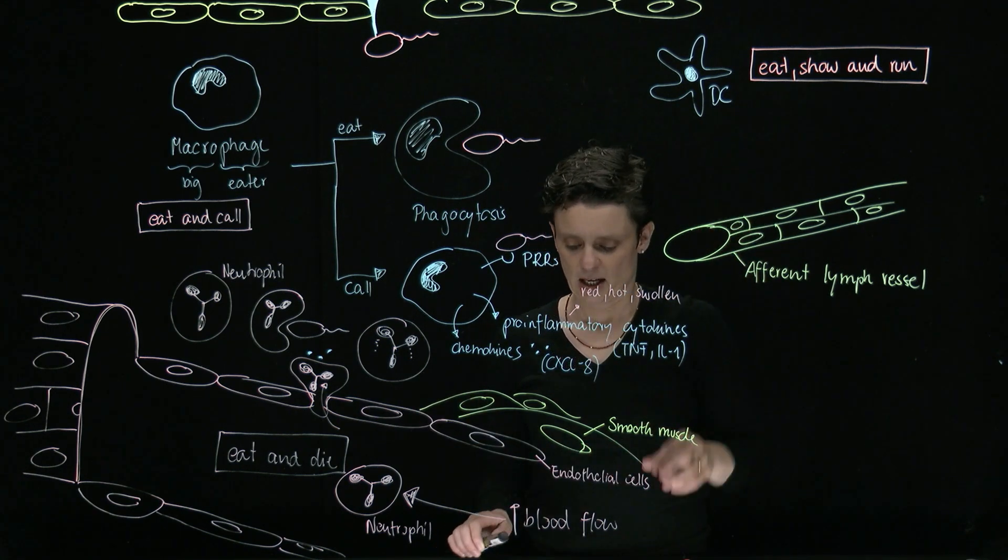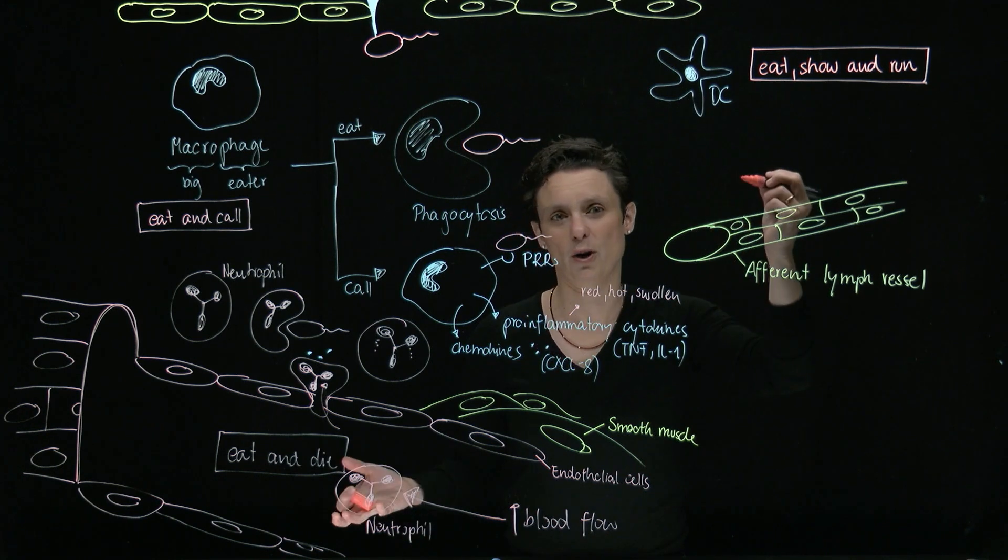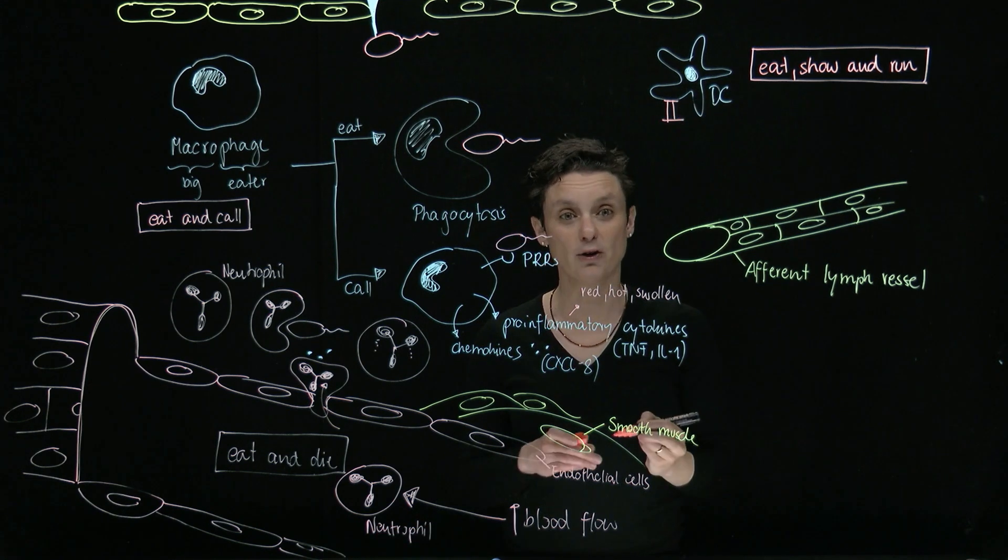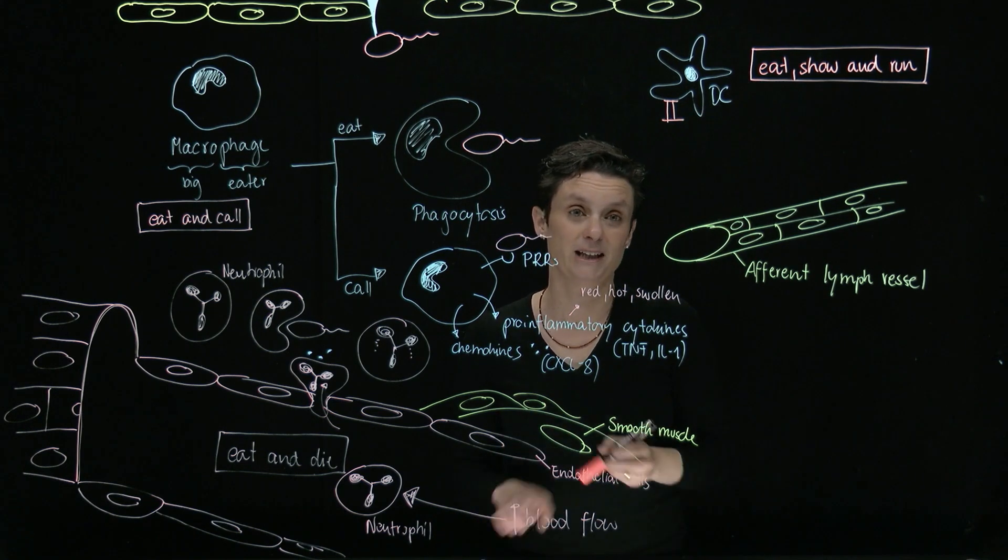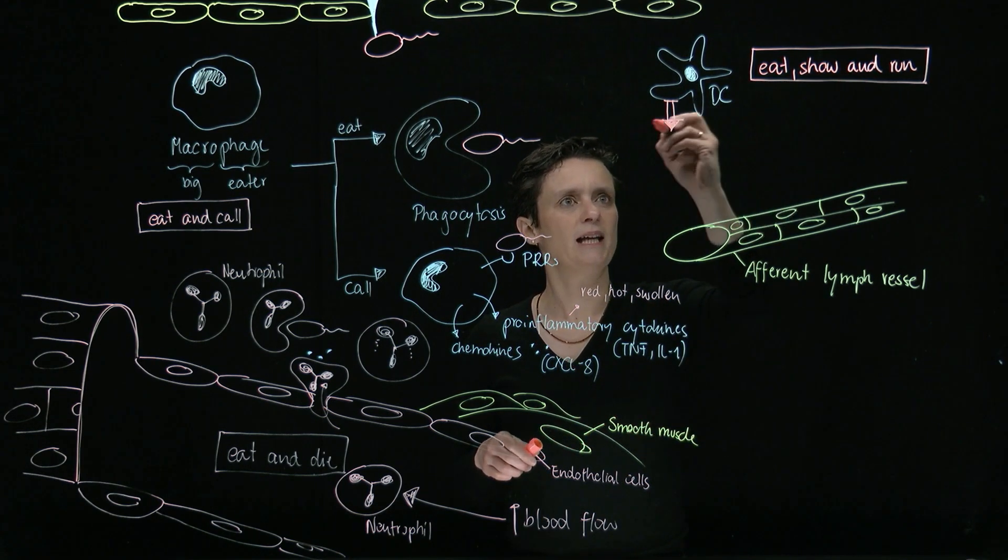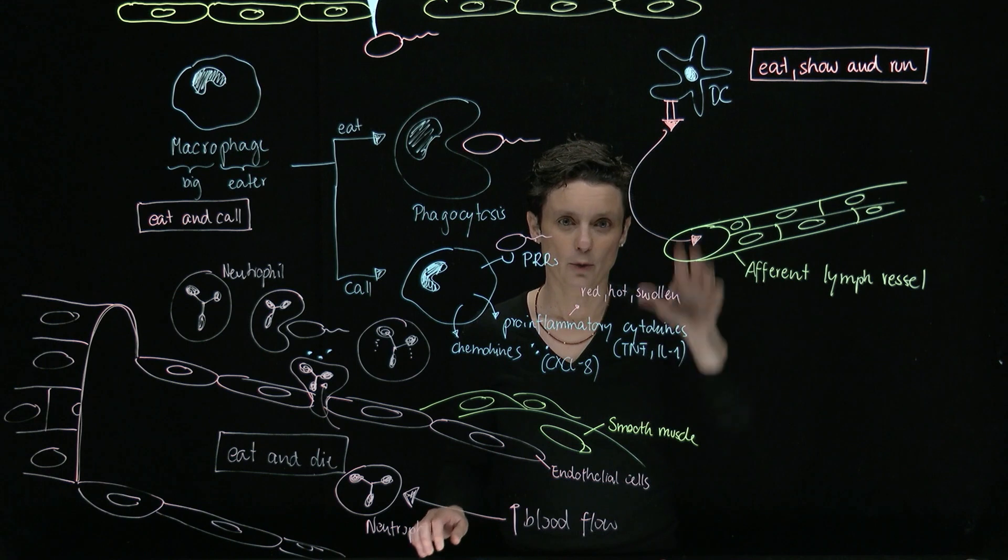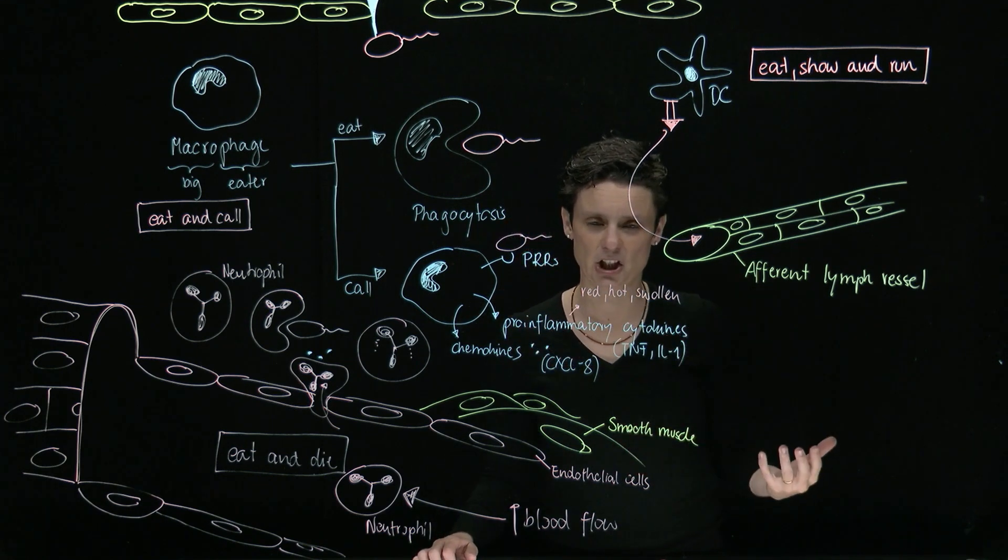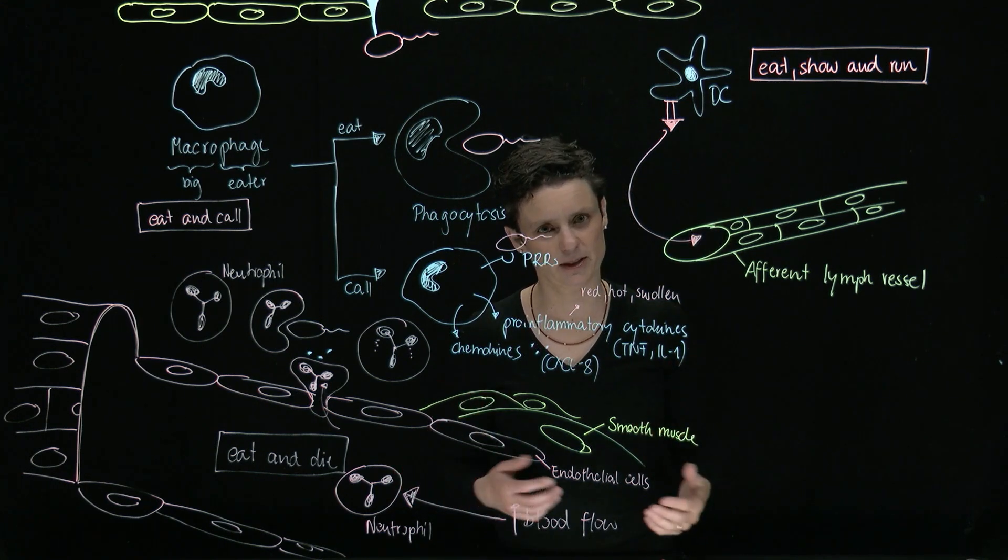Although it can also eat up stuff, what it really is good at is showing stuff that it has eaten. So it's proudly presenting and then running off to get some extra help. So it eats up stuff like the macrophage. But in contrast, it's very good in showing what it has eaten. And remember cells don't have hands to show stuff. So how do they show stuff? They show it via MHC molecules. It's going to show a part of what it has eaten, some sort of a peptide. And then it's showing it and running off. It is running off through this afferent lymph vessel, which is going to bring the cell with what it has eaten to the lymph node. And there it will initiate an adaptive immune response. It will see if it can find a T cell that can recognize this. It's going to activate the T cell. The T cell is going to eventually become a T helper cell.